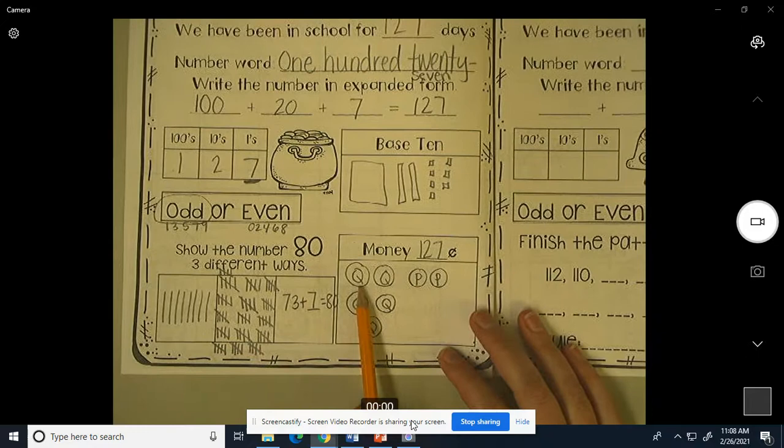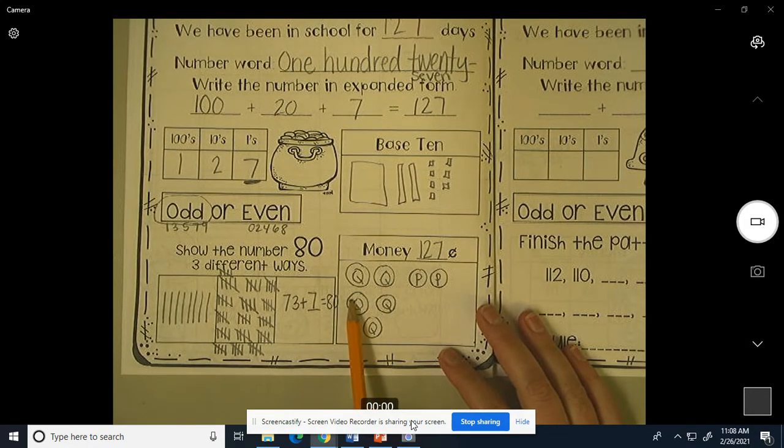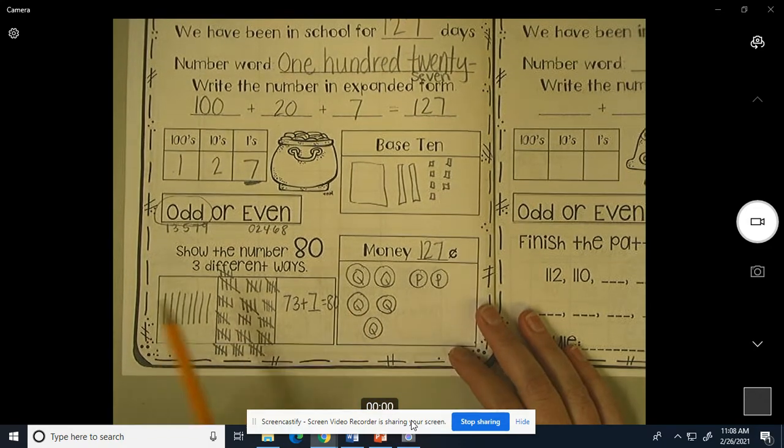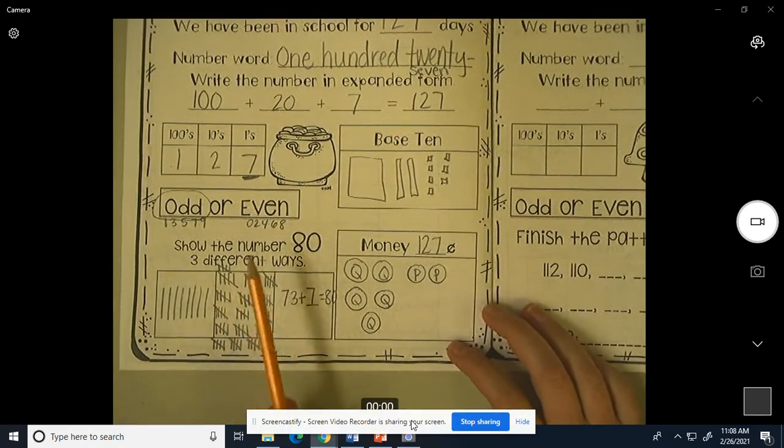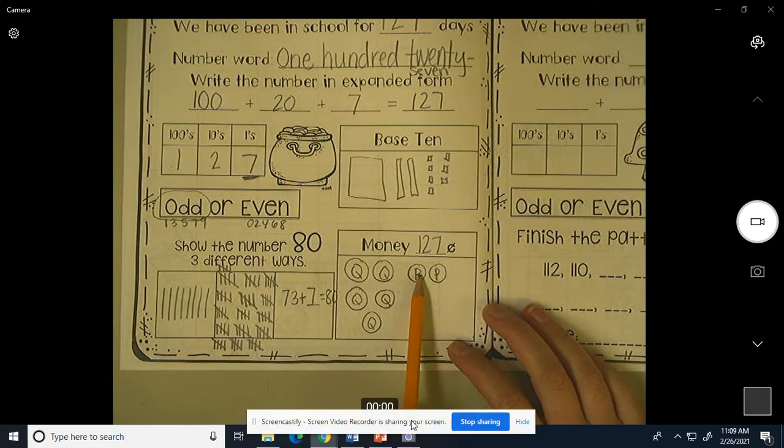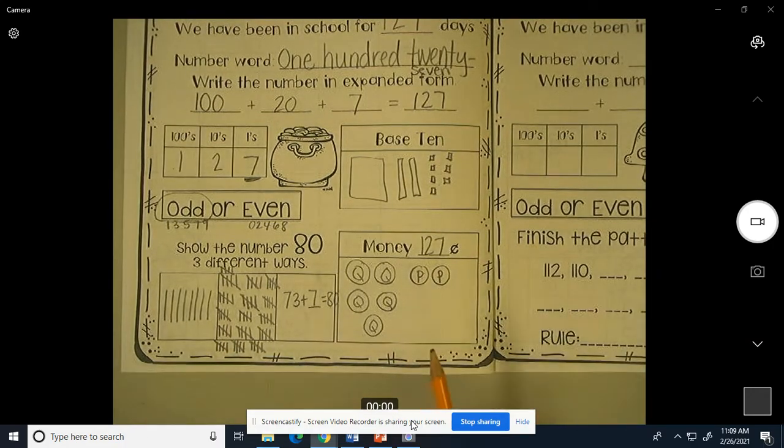Let's count this together. 25, 50, 75, 100, 125, 126, 127. Let's count it one more time. 25, 50, 75, 100, 125, 126, 127.